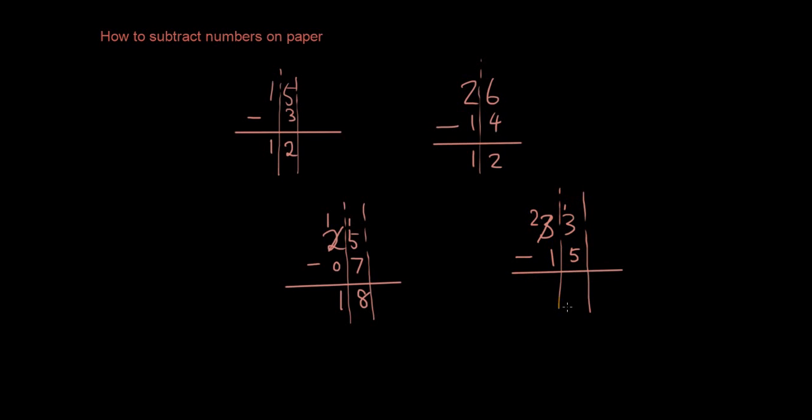So now it's 13 take 5. I would mentally do 10 take 5, and then plus the 3 on, which is a lot quicker, because 10 take 5 is 5, plus 3 is 8. Or if you want you can just do 13 take 5. It means the same thing. So 13 take 5 is 8, 2 minus 1 is 1. So the answer is 18.